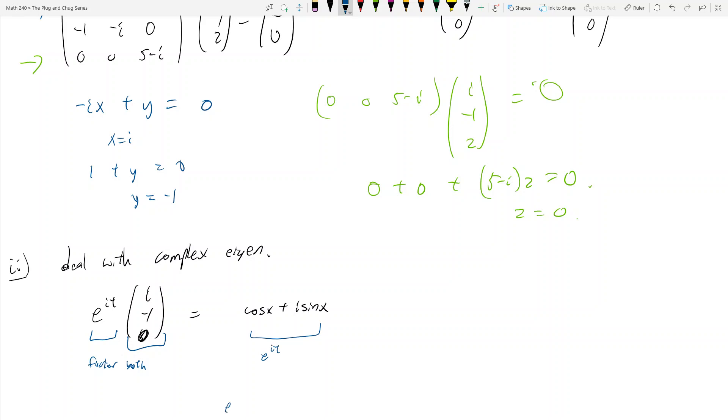And remember, if I had e to the a plus bi t in general, that's equal to e to the at times cosine bt plus i sine bt, right? So these guys should be t's, since it's e to the it, okay? So e to the a plus bi t is equal to e to the at times cosine bt plus i sine bt, right? I keep on saying bx, it's bt, because we're dealing with t's. Okay, so that's this part.